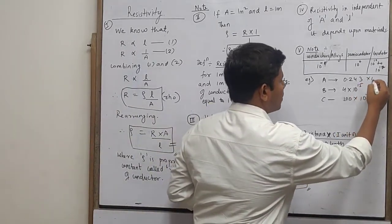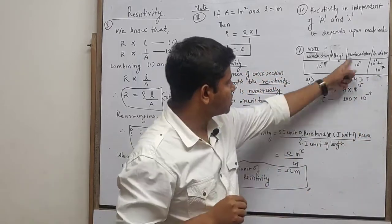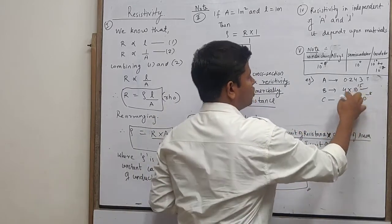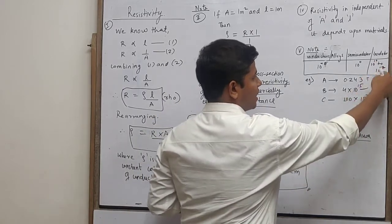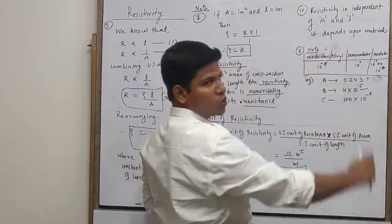10 to the power 0 will be semiconductor. 10 to the power 17 range, so this is an insulator.